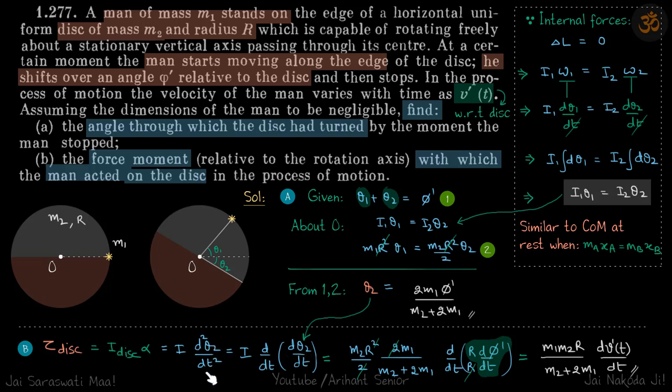We put that here: d2 theta 2 by dt squared is d by dt of d theta 2 by dt. When we substitute, we get I equals m2 r squared by 2 times 2m1 by m2 plus 2m1 into d by dt of phi dash. They have given v dash t. If this is with respect to disc, then v dash is r d phi dash by dt. Just imagine v dash t is dx by dt where x is the relative displacement, so v dash equals r d phi dash by dt. That's why we divided and multiplied d phi dash by dt by r. r d phi dash by dt is v dash, and when r gets cancelled, you get this answer.